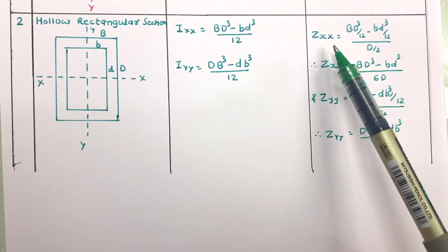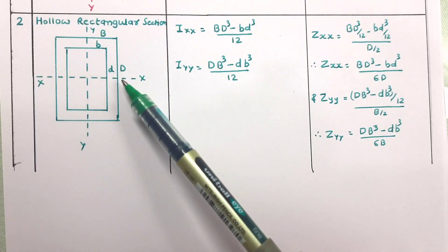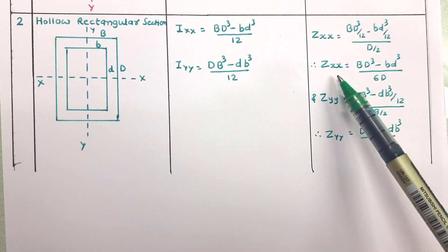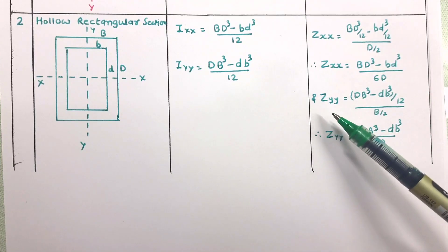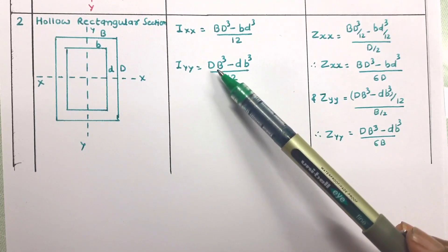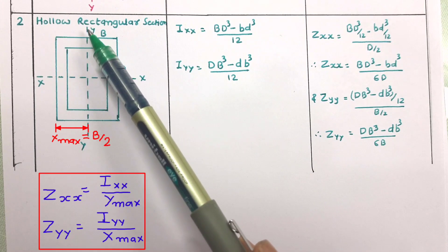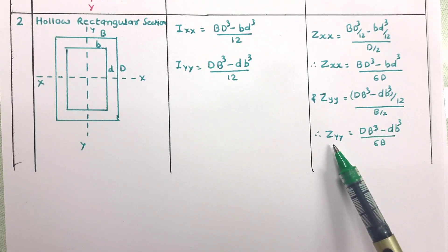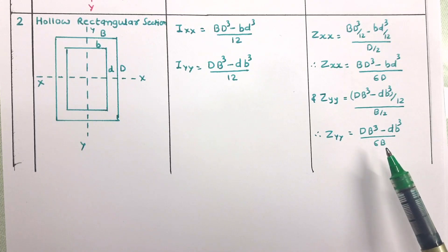The section modulus Z_xx = I_xx / y_max, where y_max = D/2, giving Z_xx = (BD³ − bd³) / (6D). For Z_yy = I_yy / x_max, where x_max = B/2, giving Z_yy = (DB³ − db³) / (6B). Now let us look at the circular section.